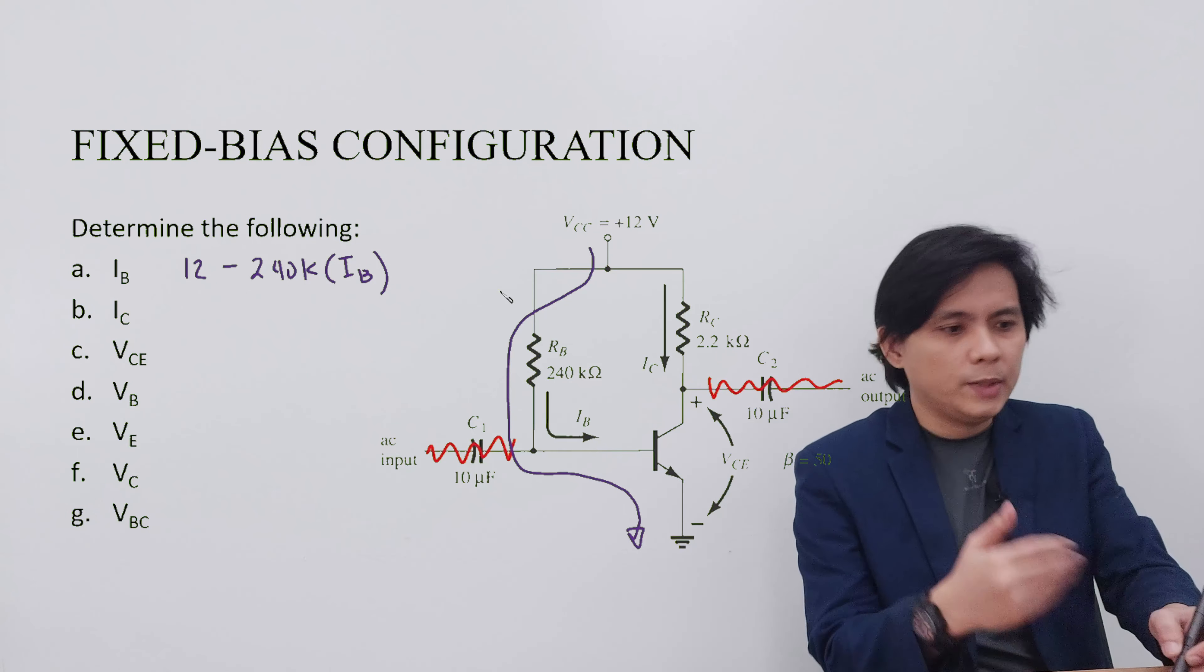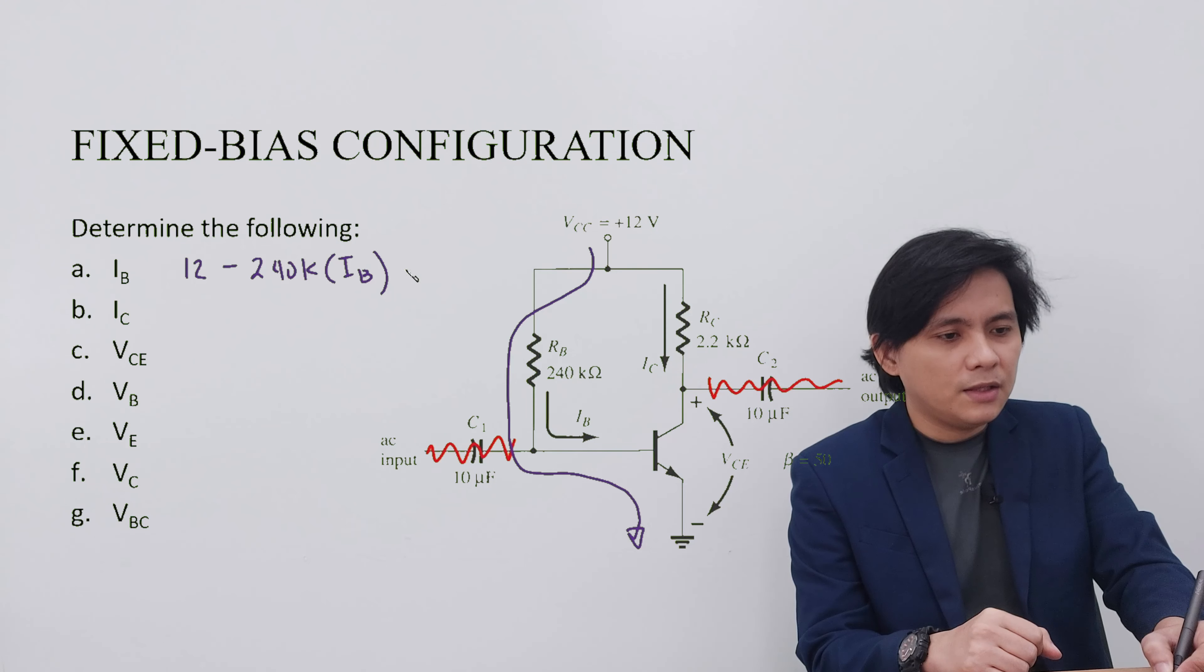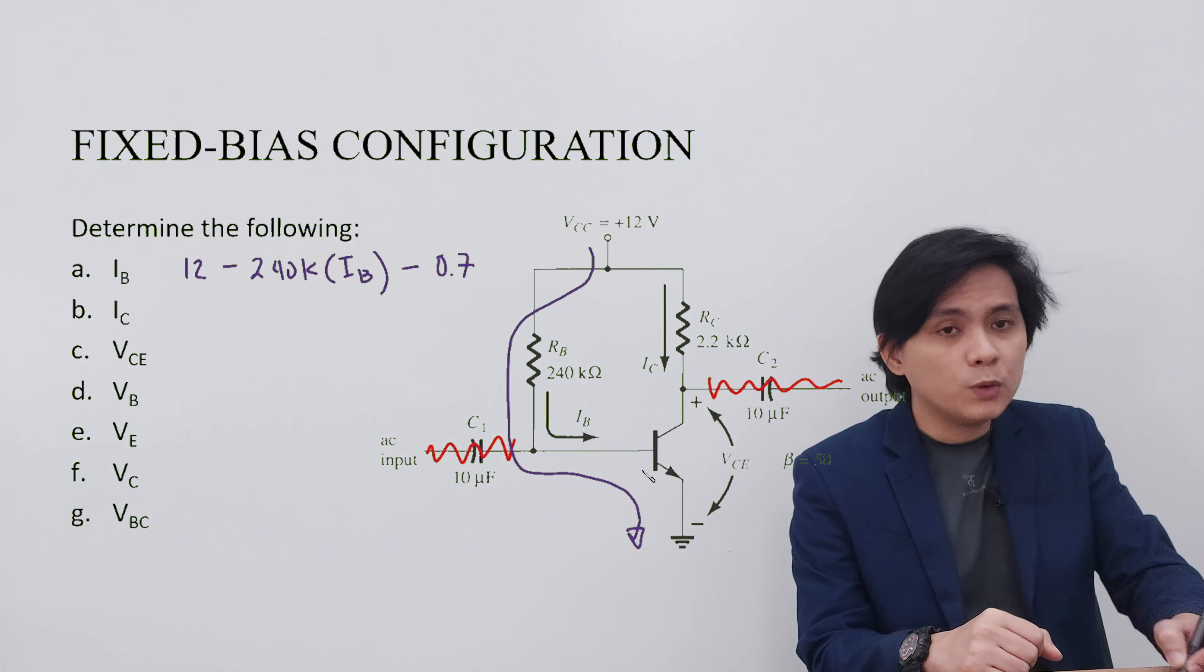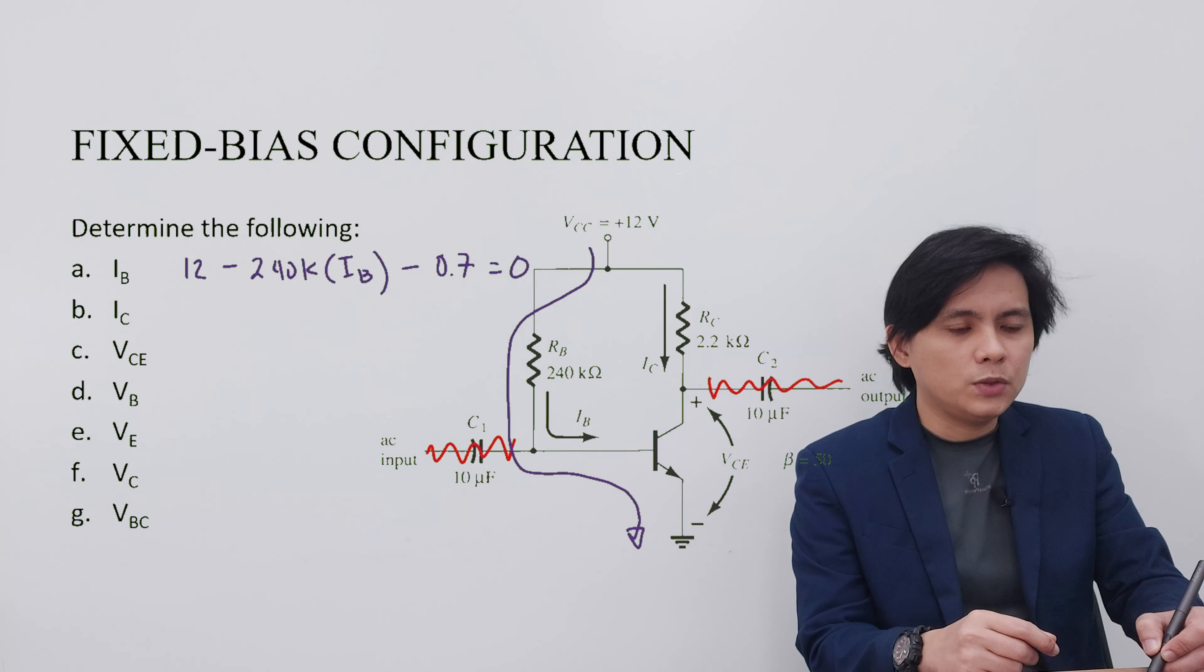Going back to the solution, after going through the RB, we have to cross the VBE junction. The VBE has an equivalent voltage drop of 0.7 volts and then down to 0. So this is equivalent to 0.